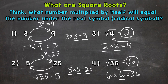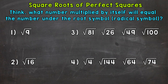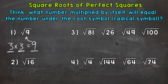Now that we know a little bit more about square roots, we're going to take a look at more examples of finding square roots of perfect squares. Let's start with number 1, where we have the square root of 9. We need to think about what number multiplied by itself will equal 9. We know that 3 times 3 equals 9, so the square root of 9 equals 3.